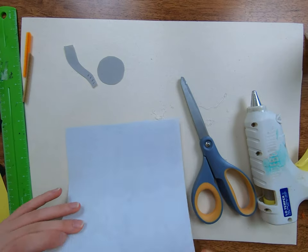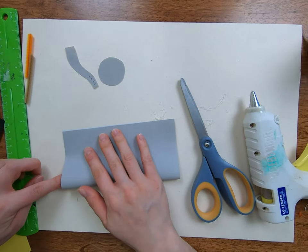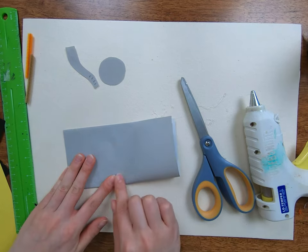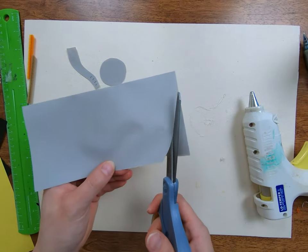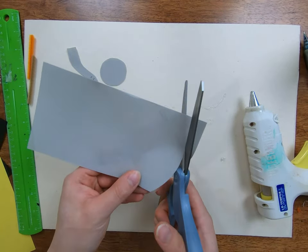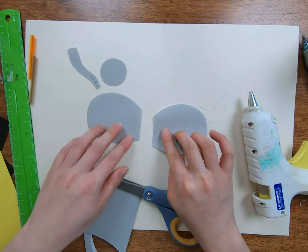Taking another piece of gray construction paper, fold it in half so that you can cut out two identical ears at the same time. Now cut out two half circle shapes. Very cute.